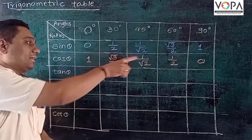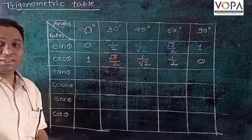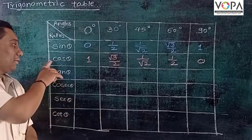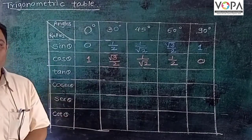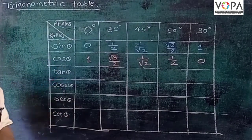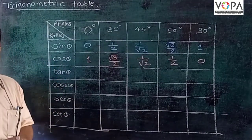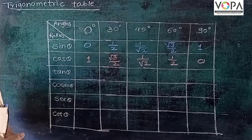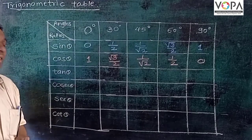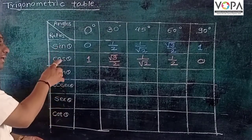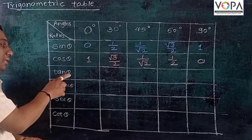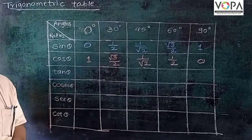In this manner you can make the table for cos θ. In a similar way, if you want to make the table for tan θ, we know that the relationship is tan θ = sin θ / cos θ.